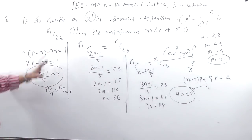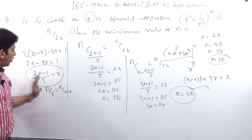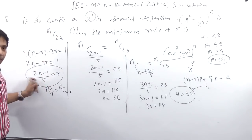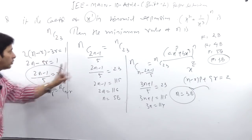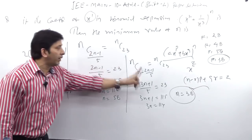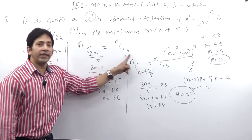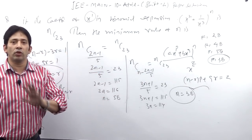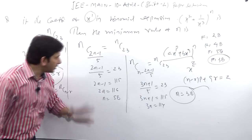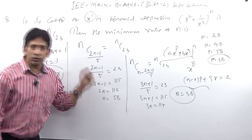Be very careful: first find which R gives the coefficient of X, then also check the complementary R = N - R case. Compare both with NC₂₃ and take the minimum value of N.